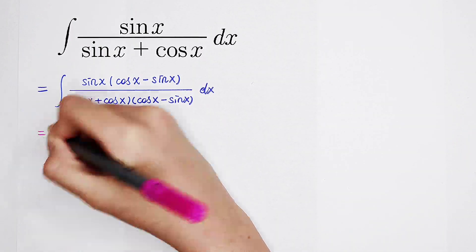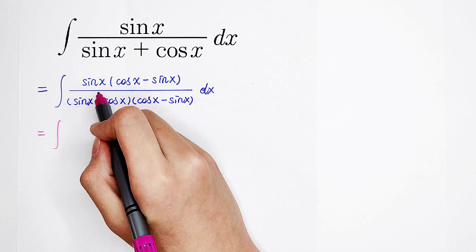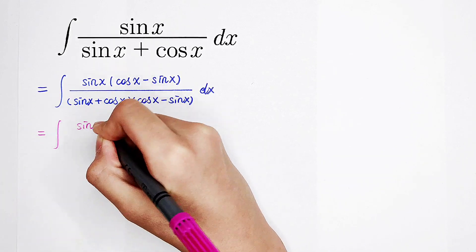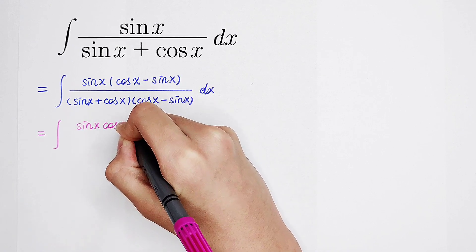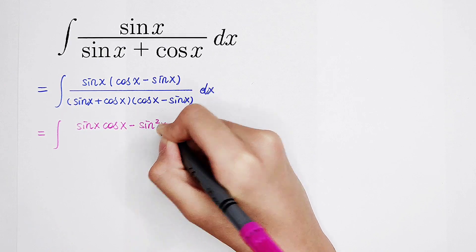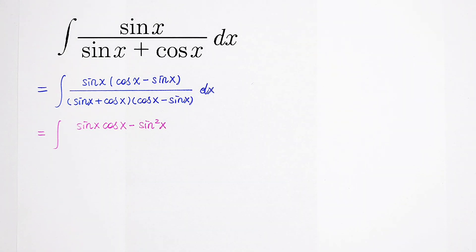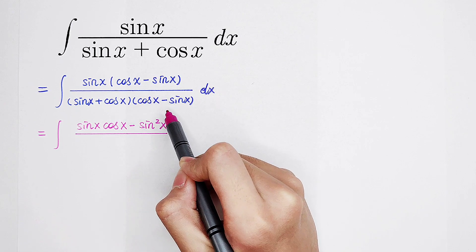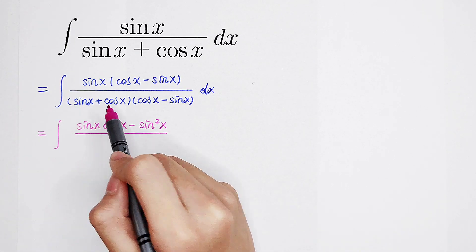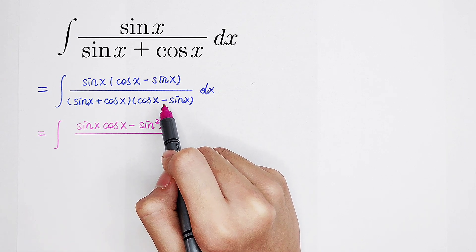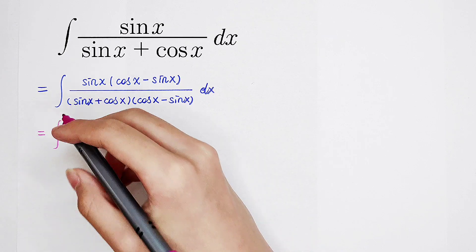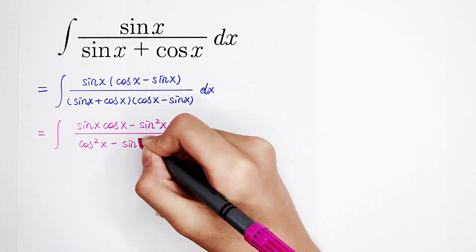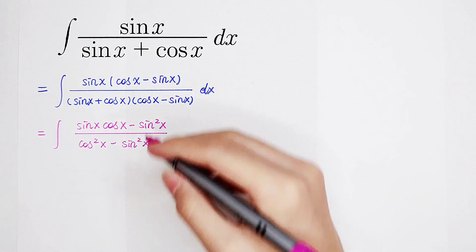So it's the integral of sine of x times cosine of x minus sine of x. The numerator is sine of x times cosine of x, and then minus sine of x all squared. Now what's on the denominator? Sine of x plus cosine of x, times cosine of x minus sine of x. Using a plus b times a minus b equals a squared minus b squared, we can write it as cosine squared of x minus sine squared of x. And dx.